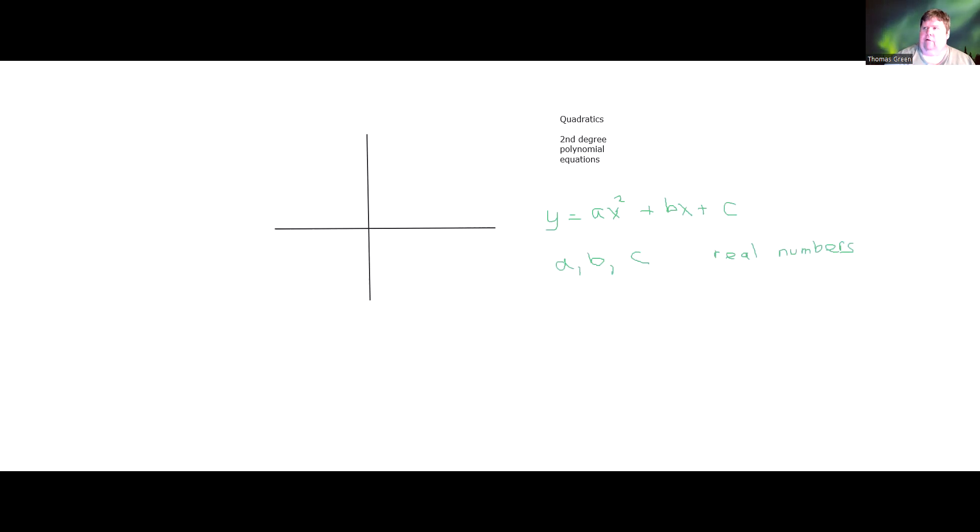Because the highest power on the independent variable in a quadratic is 2, if you were to plot the graph of a quadratic equation on a Cartesian system, it would give you this little U-shaped design that you see here. And we call this a parabola.